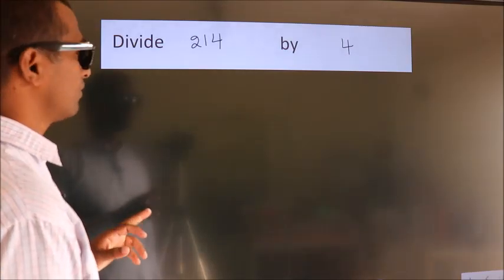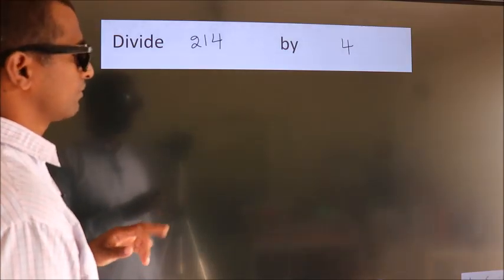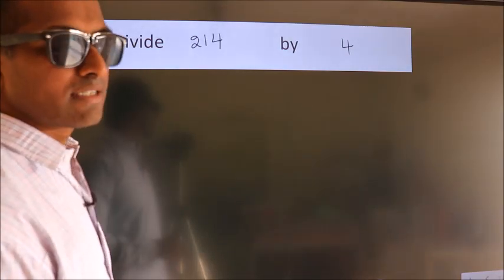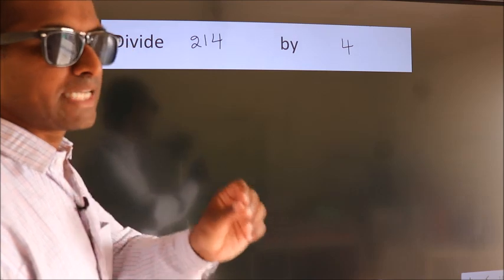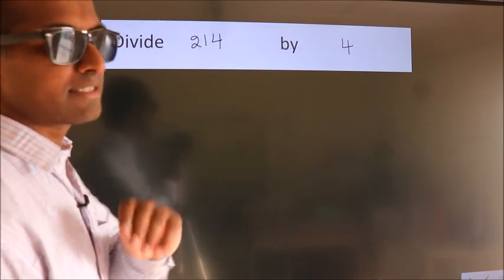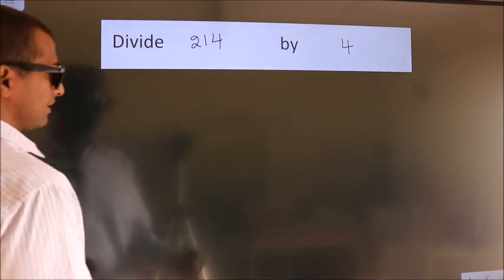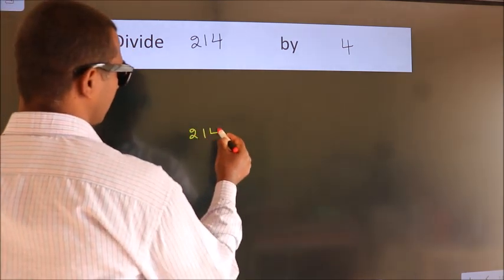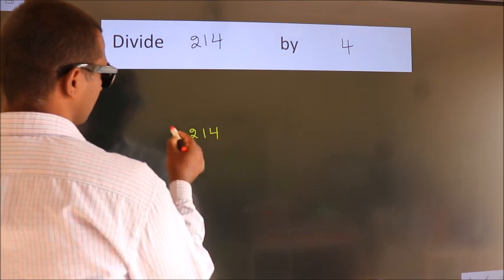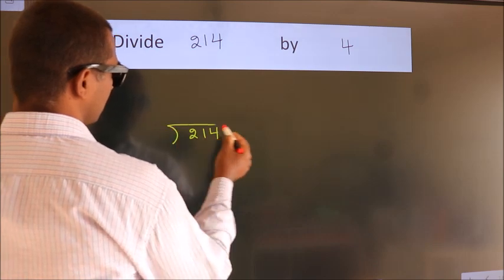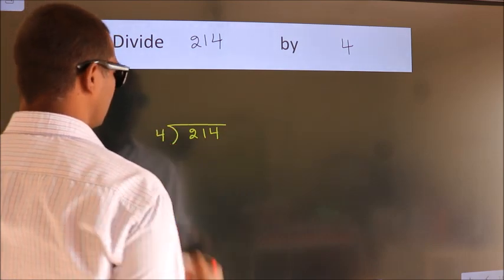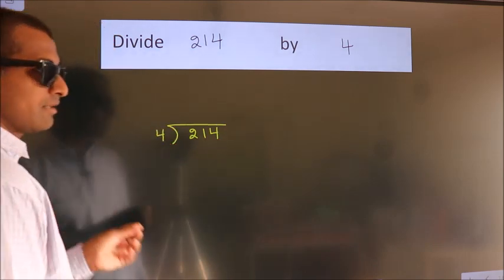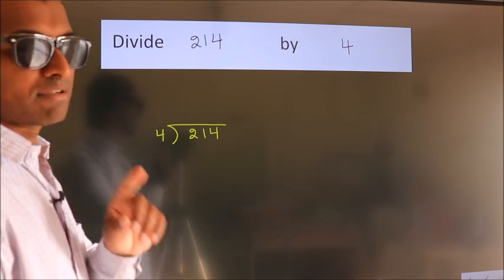Divide 214 by 4. To do this division we should frame it in this way: 214 here, 4 here. This is your step 1.